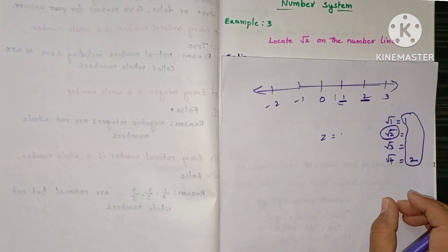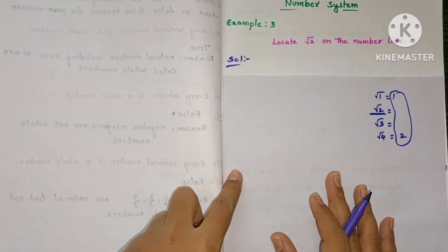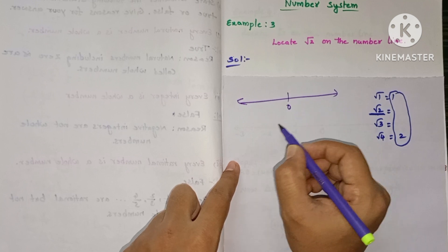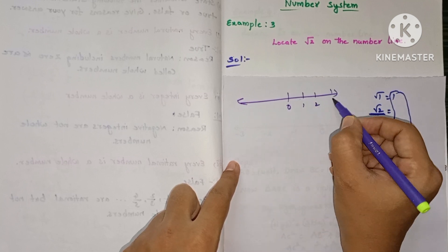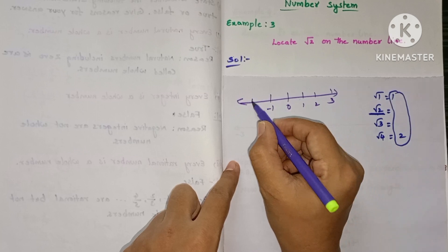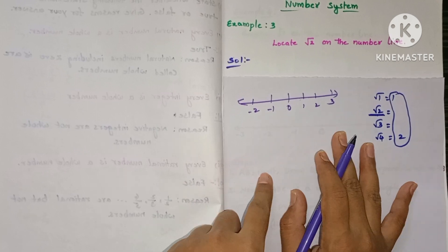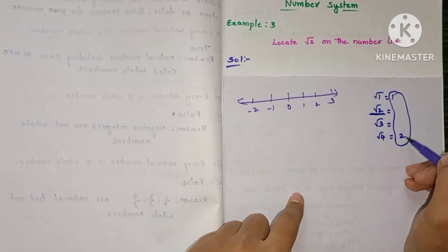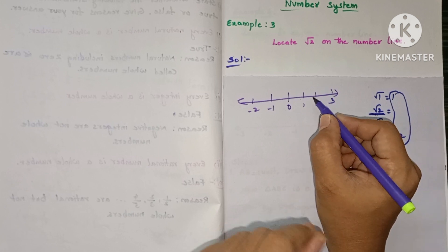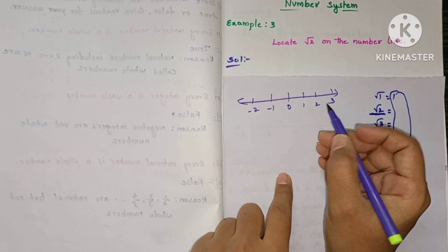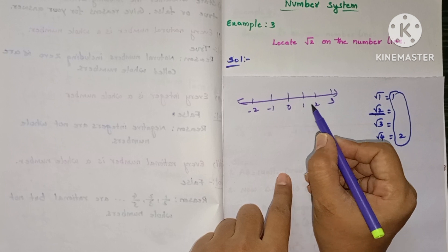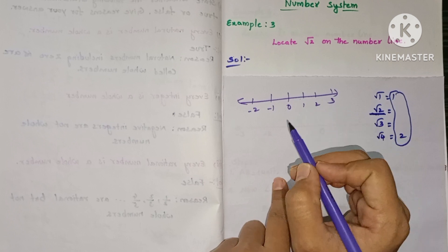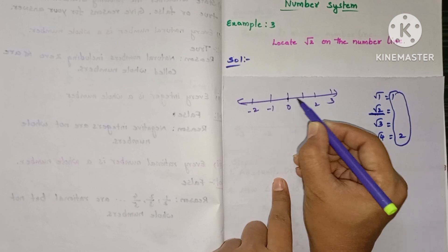You already know how to represent numbers on the number line — 0 in the middle, positive integers on the right and negative integers on the left. Now we know root 2 lies between 1 and 2, but we have to denote the exact particular point where it lies — we need to represent that precise point for the value of root 2.